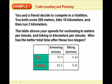Okay, example one, understanding and planning. We're going to talk about this problem solving plan, which has some steps to it. One of the first steps is to just figure it out, understand what to do. So you and a friend decide to compete in a triathlon. You both swim 200 meters, bike 10 kilometers, and then run 2 kilometers. The table shows your speeds for swimming in meters per minute and biking in kilometers per minute. Who has the better time after the two stages? So we're just reading, trying to figure out what to do.